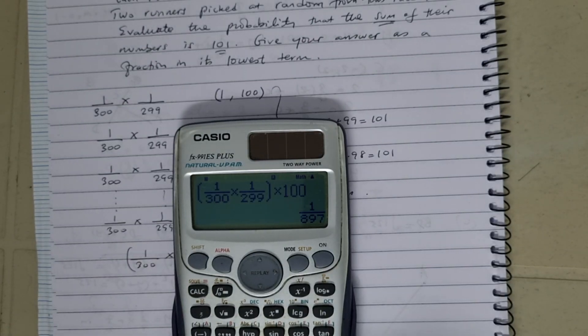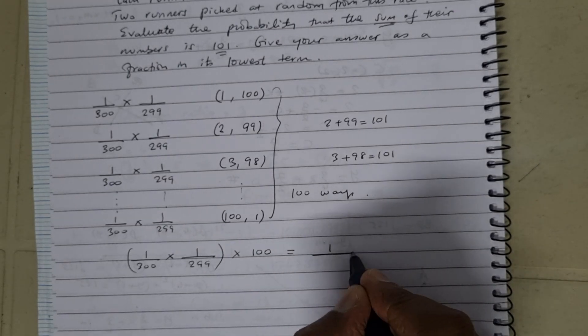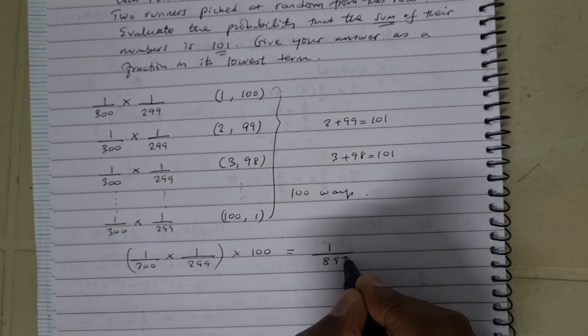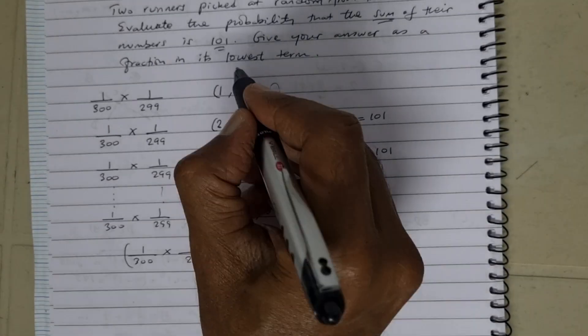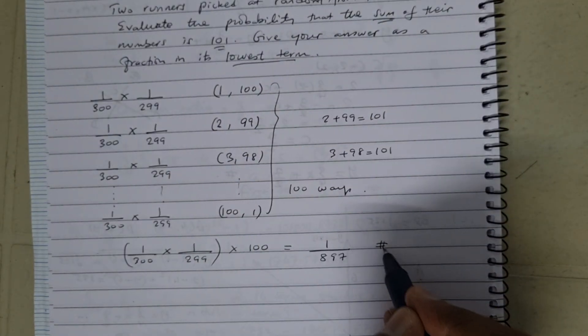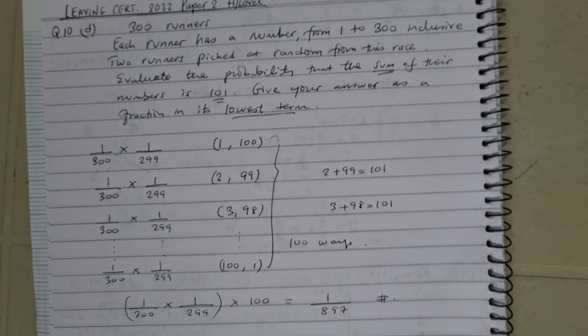And you're bound to get 1 over 897. So our final answer is 1 over 897. That's the answer as a fraction in its lowest terms. So here we are, that's part D of the question. Take care.